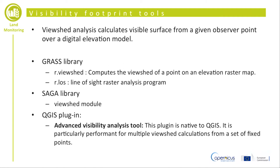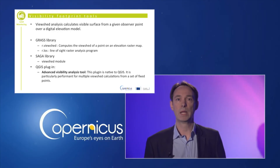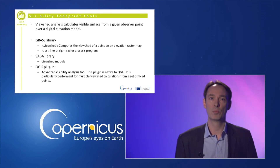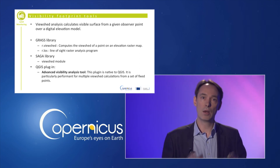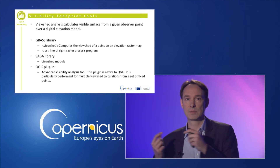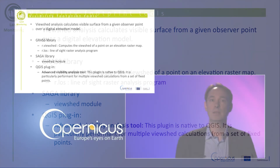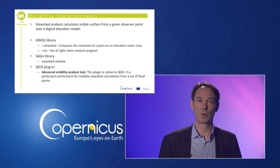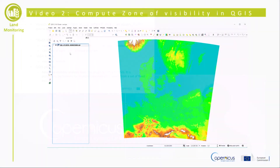The analysis uses the elevation value of each cell of the DEM to calculate the visible surface from a given observer location. The GRASS library provides two routines: R.viewshed, which computes the viewshed from points on an elevation raster map, and R.LOS, a line-of-sight raster analysis program. The SAGA library also has a viewshed module, and you can extend QGIS with a plugin called the Advanced Visibility Analysis Tool, which is particularly performant for multiple viewshed calculations from a set of fixed points.